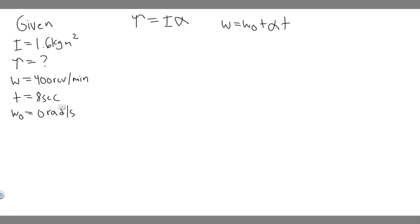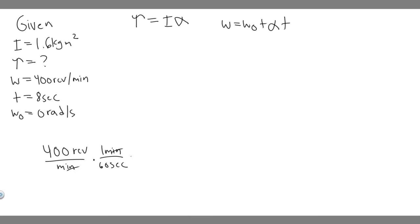Before we do that, notice that omega₀ is in radians per second and time is in seconds, but the given angular speed is in revolutions per minute. We need consistent units, so let's convert 400 revolutions per minute to radians per second. We multiply by 1 minute over 60 seconds to cancel minutes, then multiply by 2π radians per revolution to cancel revolutions. That gives us 400 divided by 60, times 2π, which equals 41.8879 radians per second.